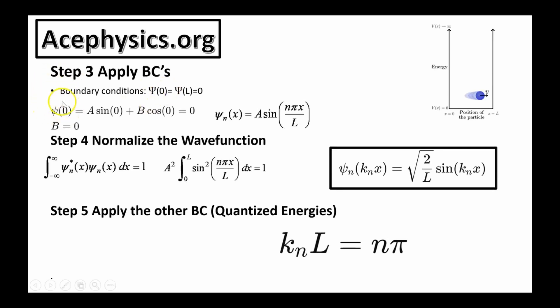Plugging in zero for psi, psi of zero equals a sine of zero plus b cosine of zero, and this must equal to zero. This tells us that b is equal to zero because cosine of zero is one, and the only way this can equal to zero is if b is equal to zero. So our updated wave function is psi n equals a sine of n pi x over L, or a sine of kx.